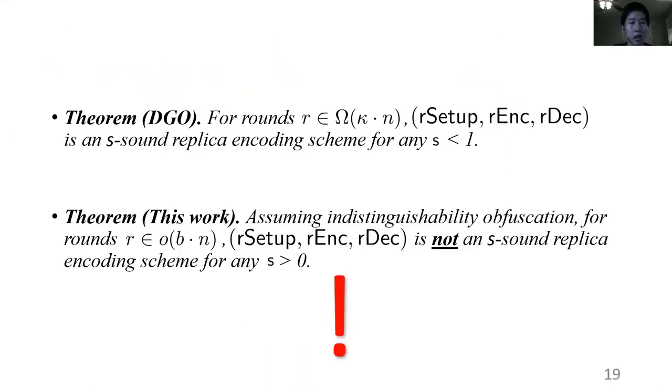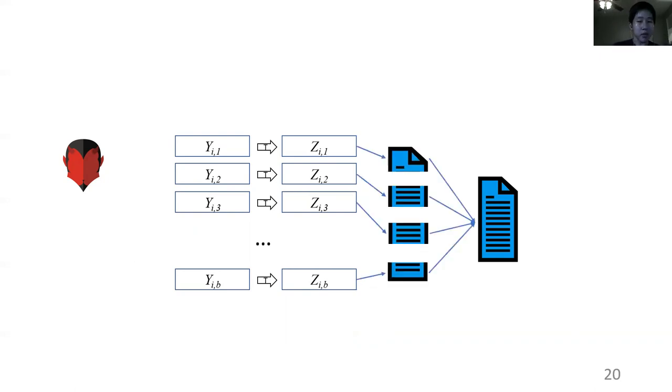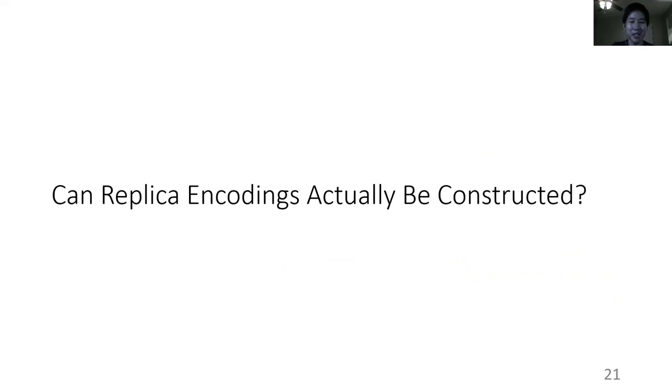And so if we go back to the DGO theorem, this actually highlights an oversight in their analysis, which was that they implicitly assume that the storage of the adversary can be attributed to individual random oracle queries which it's made, and that between different random oracle queries, these sort of accumulate additively. But from our previous construction, we can see that this is not always the case. So just taking our first result, this leaves open an important open question, which is, can replica encodings actually be constructed?